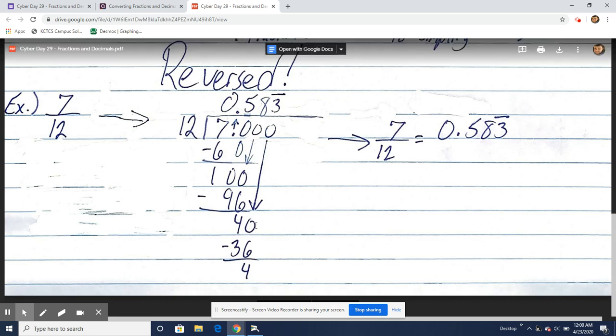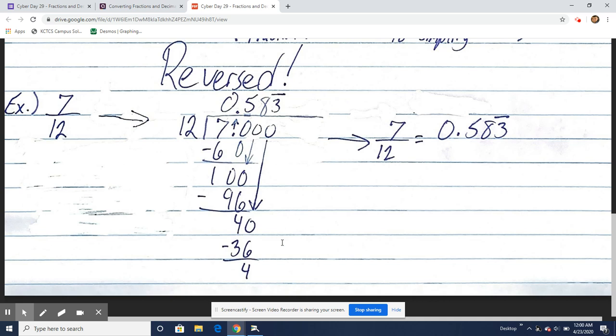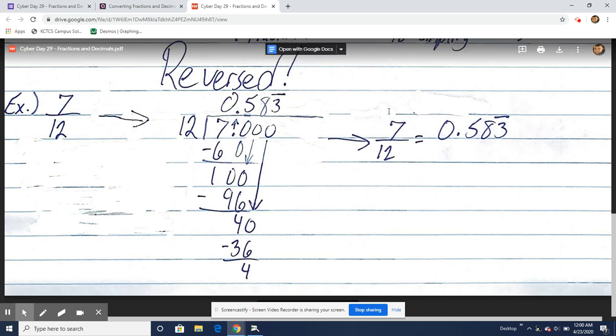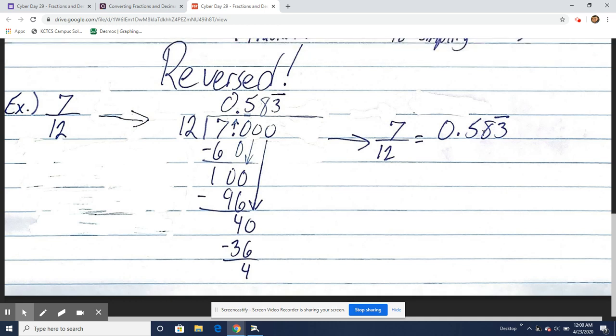And then right there we notice we're going to have that repeating pattern of 4 every time. So that 3 is going to be repeating. So 7 twelfths as a decimal would be 0.583 with a 3 repeating.